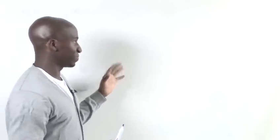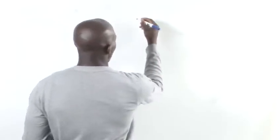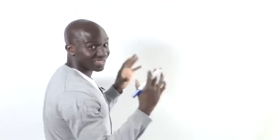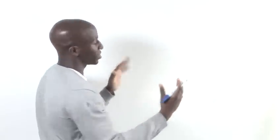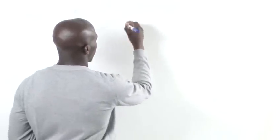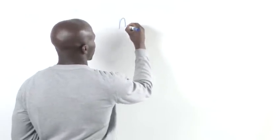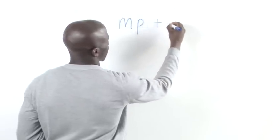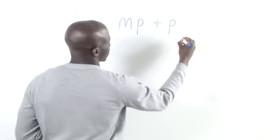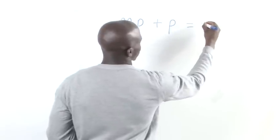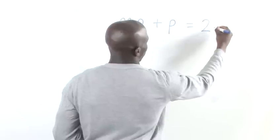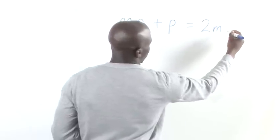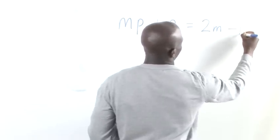The first thing we would want to do is set up our basic equation. Now, remember an equation needs an equal sign, an expression does not. So what we would do, we would put MP plus P equals 2M minus P.